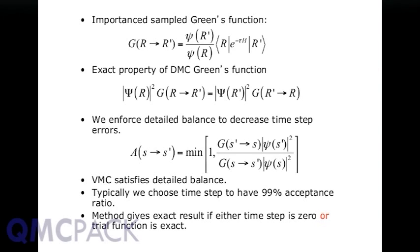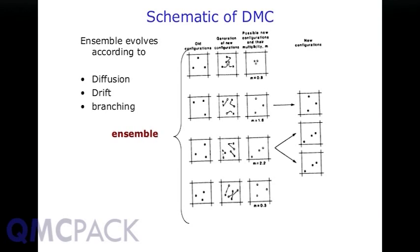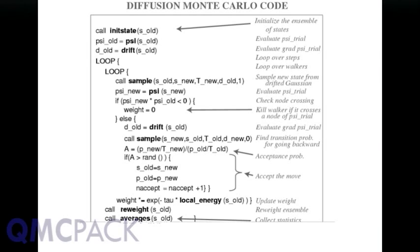In summary, the scheme has walkers, each representing electrons at definite positions. We generate new configurations with a drifting random walk, calculate multiplicities from the local energy, and apply branching: a weight of 0.8 kills the walker, 1.6 keeps one, 2.2 creates two copies. The pseudocode has two loops — over iterations and over walkers — where we sample new positions with the drift velocity, calculate acceptance probability, replace the walker if accepted, and compute the branching weight from the local energy.